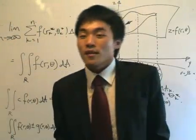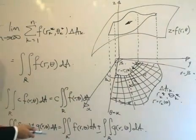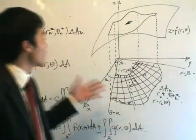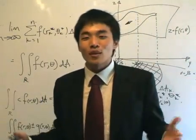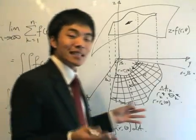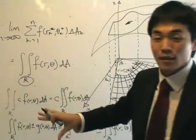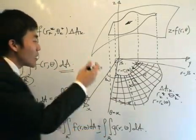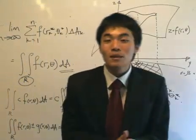Just as with double integrals in rectangular coordinates, the polar double integral obeys the same properties: scalar multiplication can be brought outside the integral, and the double integral of a sum of two functions can be split into separate integrals and added. This is the definition of the double integral in polar coordinates. In the next lesson, we'll convert this double integral into an iterated integral — there's an important modification needed to delta A because of the polar coordinate system, so stay tuned.